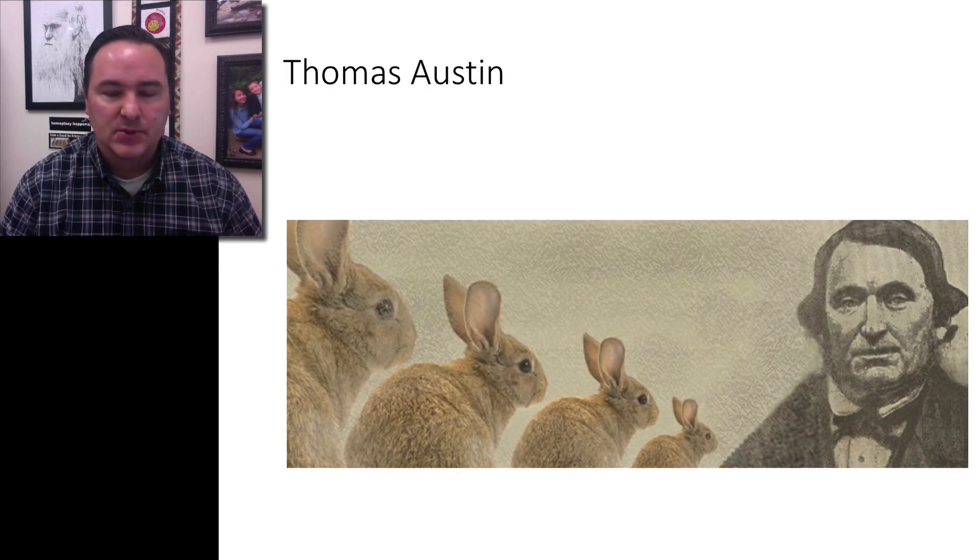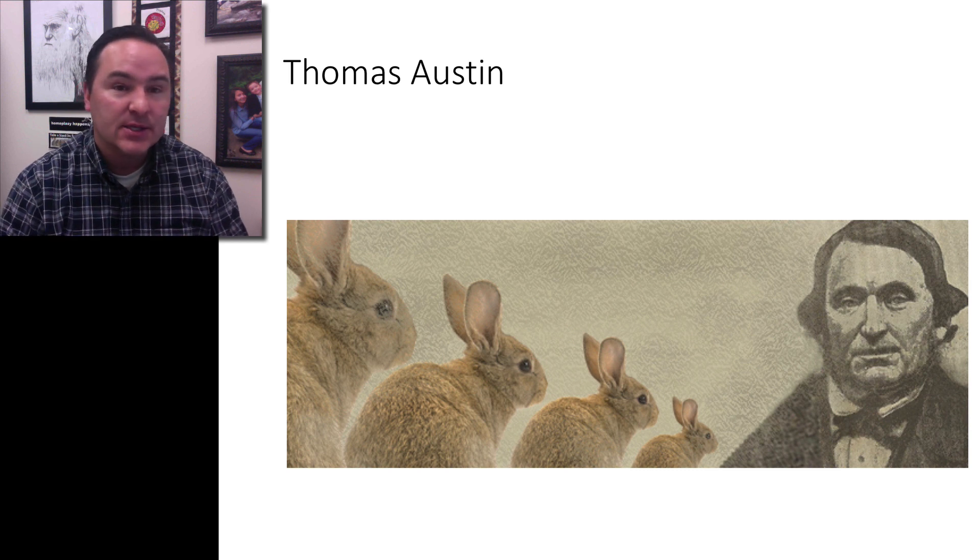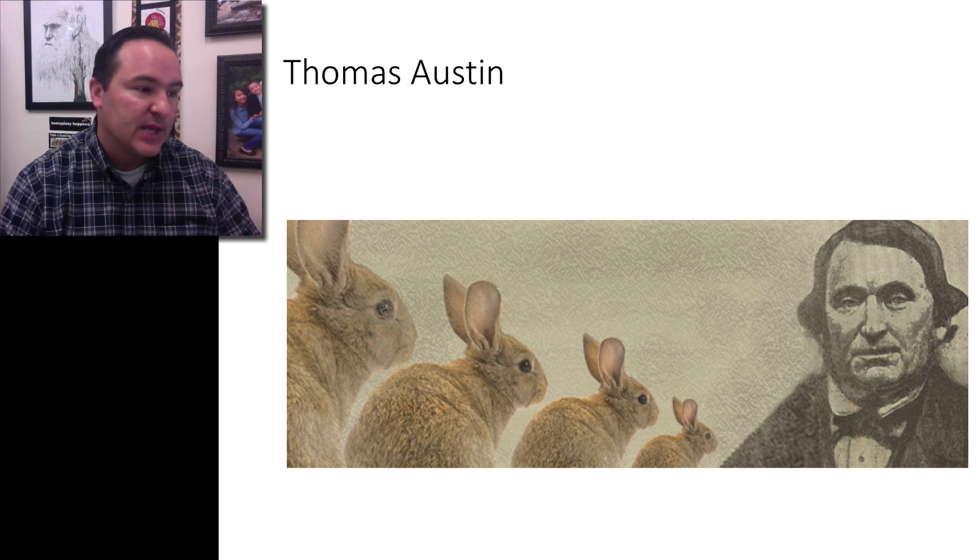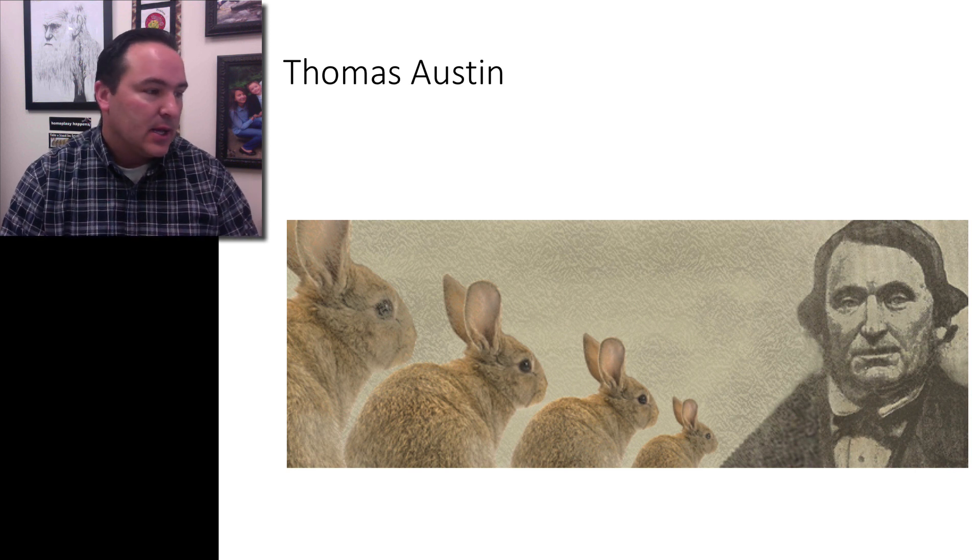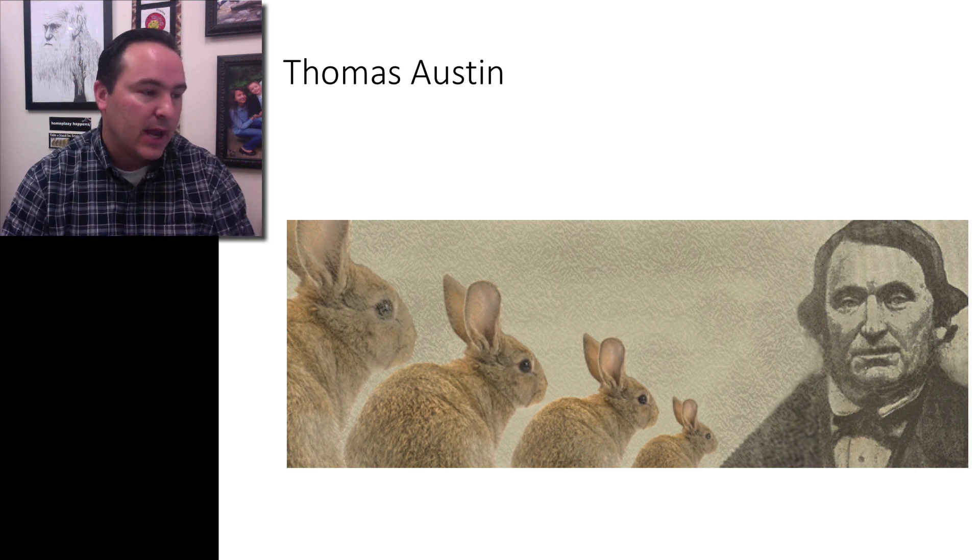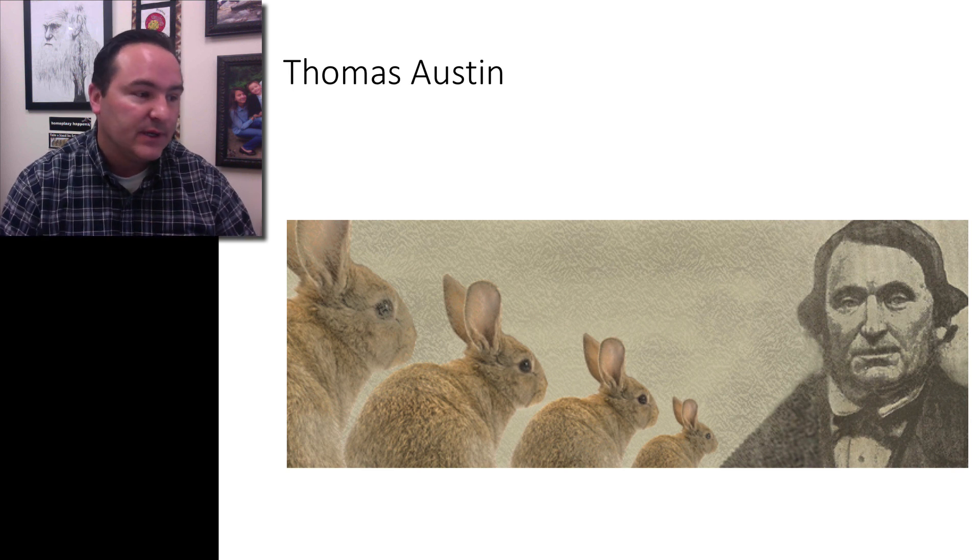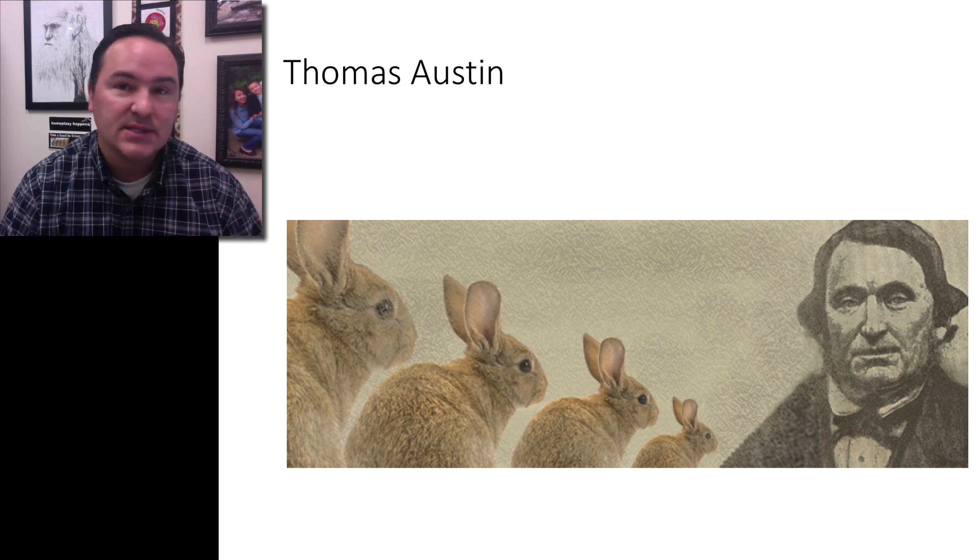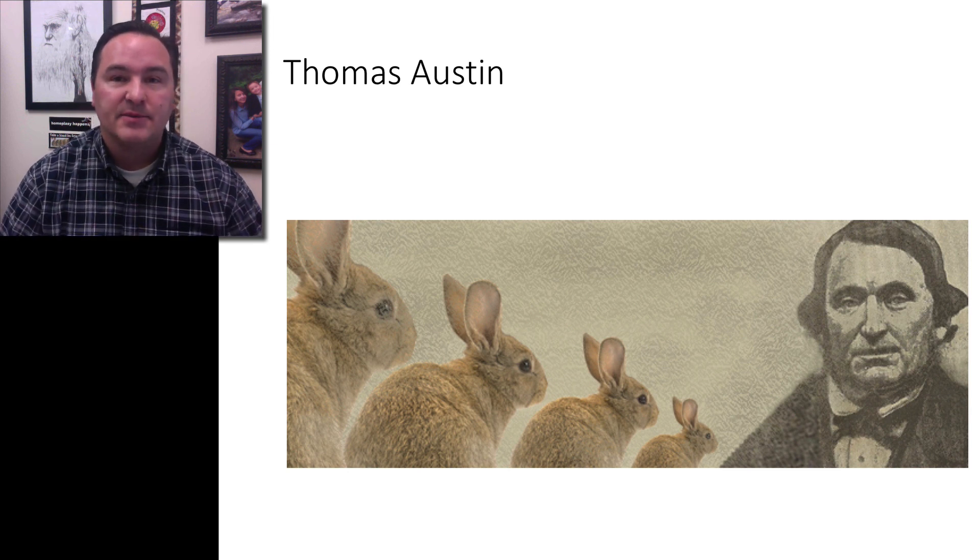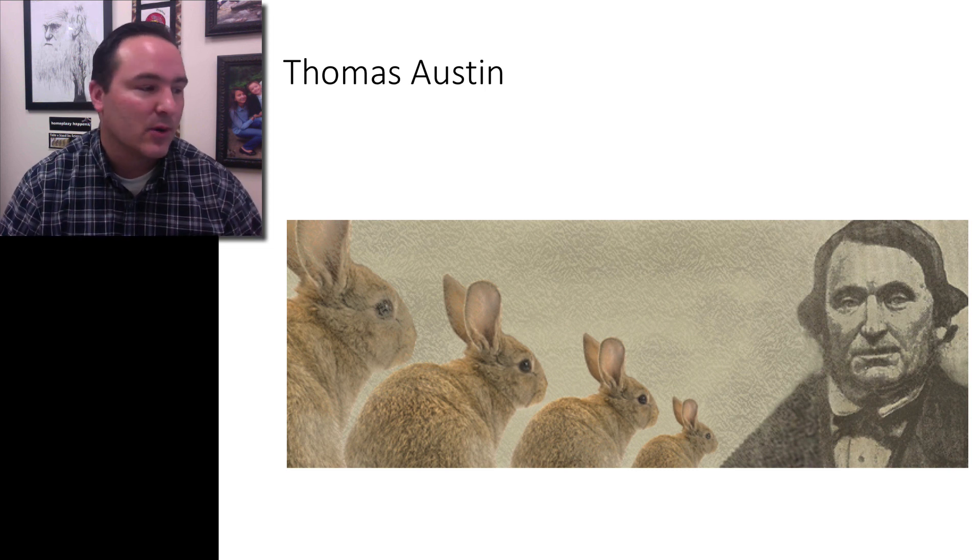I want to talk about a story that happened to Thomas Austin. He was an Englishman who migrated to southern Australia to farm land near Victoria. And in October of 1859, he was homesick for his land of England and missed hunting the types of things he would hunt, and one of the things he enjoyed hunting were rabbits.